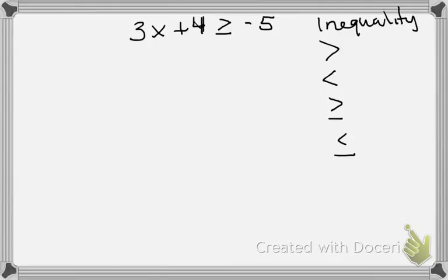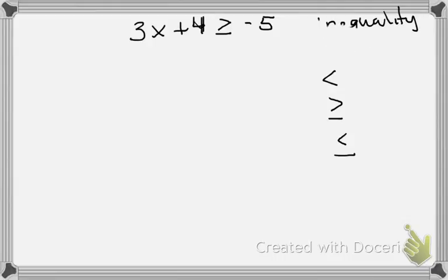Remember, when you're kids, your teacher would teach you the alligator eats the bigger number. The alligator has his teeth and his eye — basically there's the alligator. And so the alligator would always eat the bigger number. That's what we were taught in elementary school about inequalities.